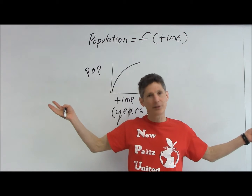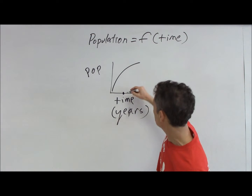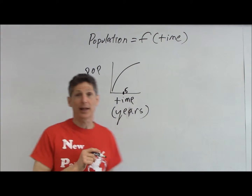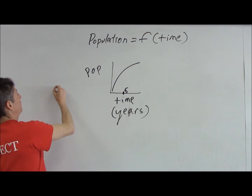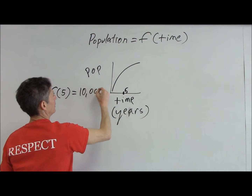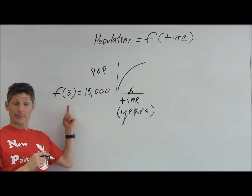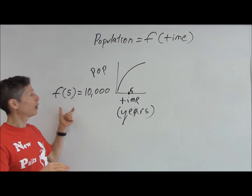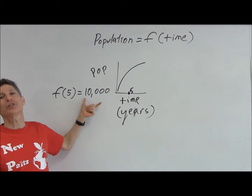Let's make up some numbers. Let's look at what's happening at a particular time — say after five years. I could write: f of five equals 10,000. What would that mean? That would mean at year five, there are 10,000 people in this town. That's the population of this town. We're just talking about at some particular x value, what's the y value? That's all that f of x means.